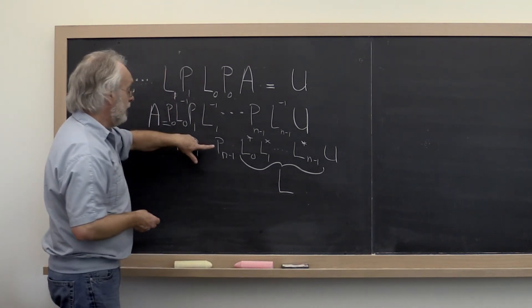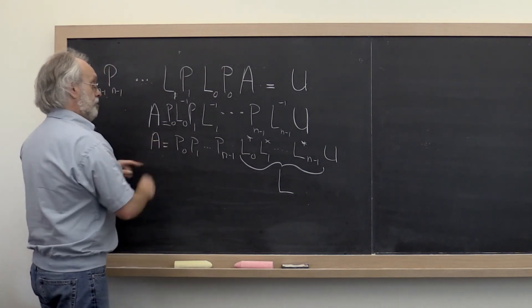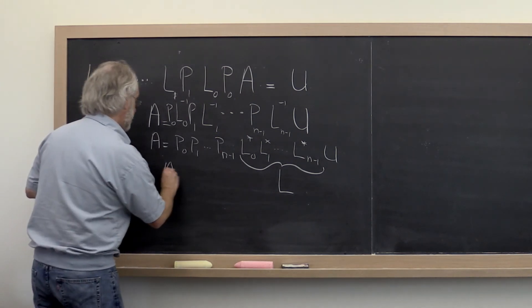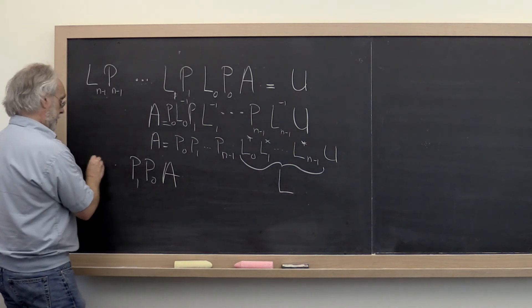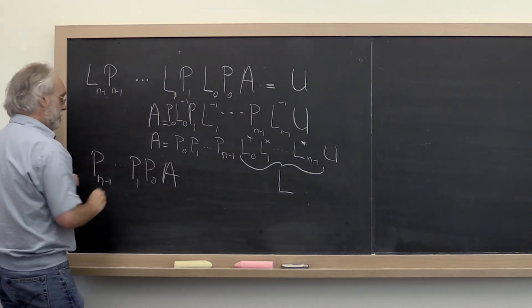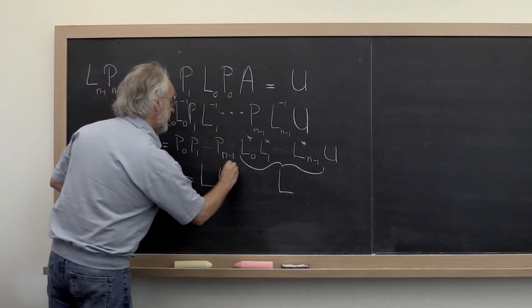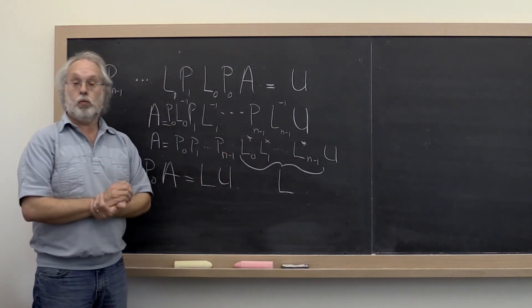And if we then go and we bring all of these permutation matrices back to the left, what you find is that you could have permuted matrix A up front and then computed its LU factorization. And that's exactly what would pop out.